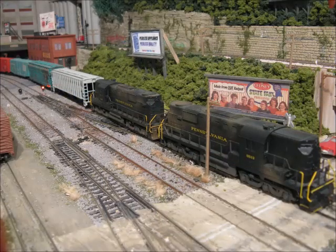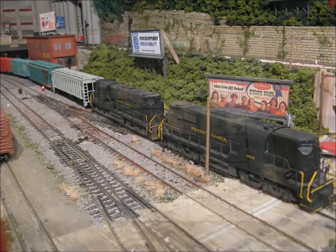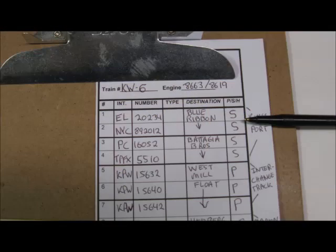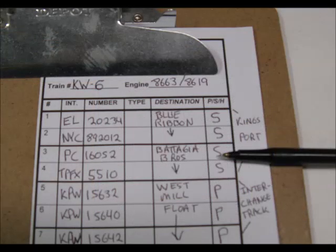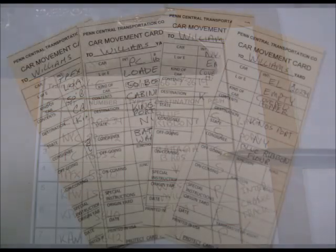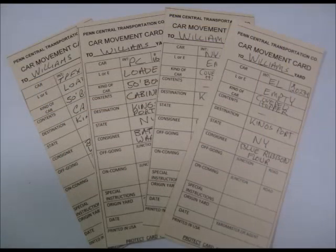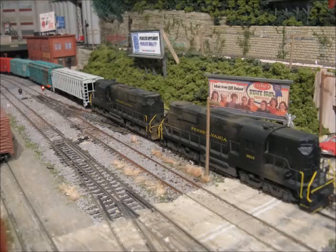Let's run a train and I'll show you how this works. Our freight today will be led by a pair of RSD-12s. The first stop will be at Blue Ribbon Flour — they have to drop off two cars. The next stop is Battaglia Brothers Warehouse, where they'll be dropping two other cars. Here are the cards for those four freight cars.